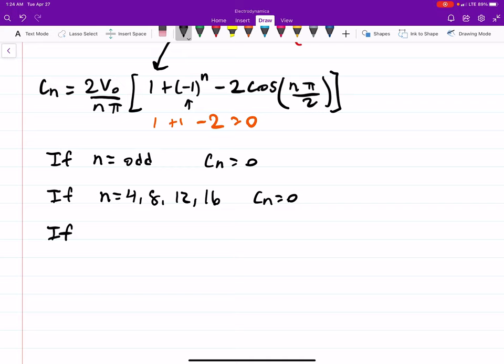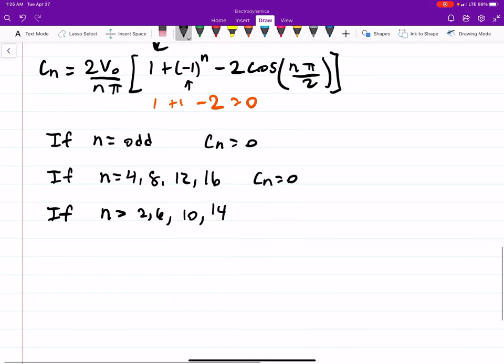Instead, if n is equal to 2, 6, 10, 14, if you plug those numbers in, you'll see you'll get cosine of π, cosine of 3π, cosine of 5π. So what you end up getting there is 1 plus 1, so let me erase this, the 1 stays, it's still even, so that's plus 1.